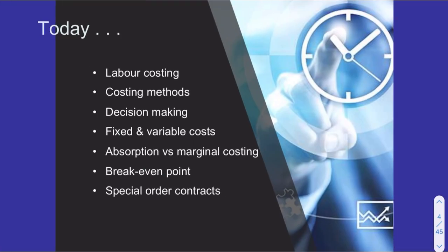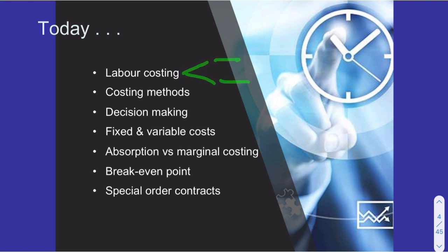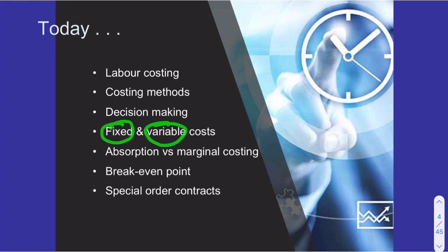Today we're going to look at labour costing in detail — we've mentioned it before but didn't go into detail. We'll talk about different ways of costing labour, look at costing methods and how decisions are made, distinguish between fixed and variable costs, and discuss the two main costing models that use these, finishing with the break-even point and special order contracts.